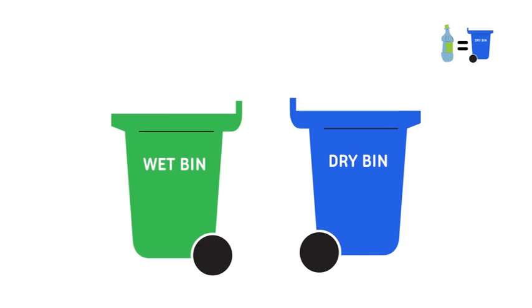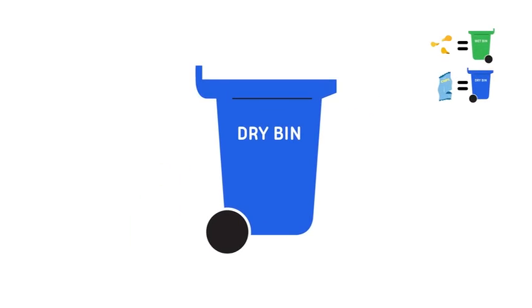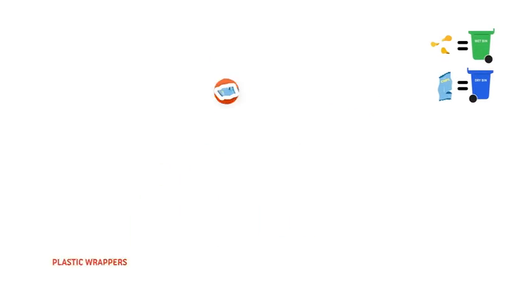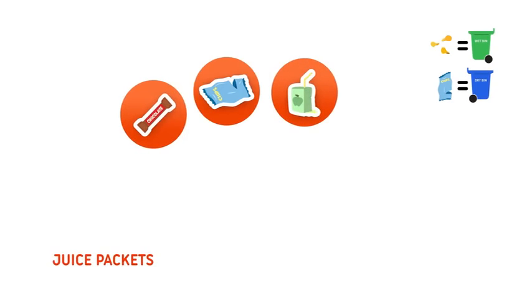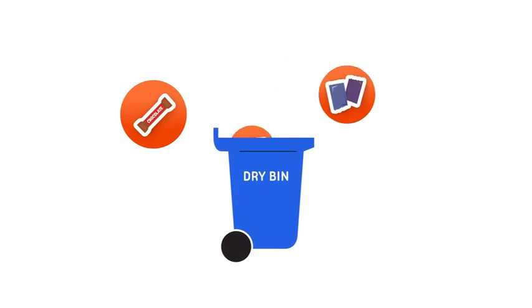Chips packets are made of plastic, so they go into the dry bin. Remember, the chips will go into the wet bin. The packet will go into the dry bin. Other packets will also go into the dry bin. Things like plastic wrappers, toffee packets, juice packets, shampoo sachets all go into the dry bin.